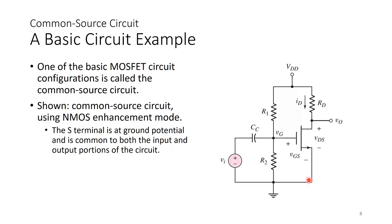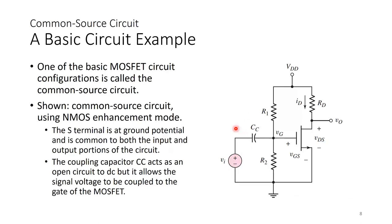The coupling capacitor CC acts as an open circuit to DC but allows the signal voltage to be coupled to the gate of the MOSFET. The purpose of CC is to allow AC to pass through but not DC, because DC coming from an earlier circuit module before this amplifier — we do not want that DC to interfere with the DC biasing of this MOSFET.